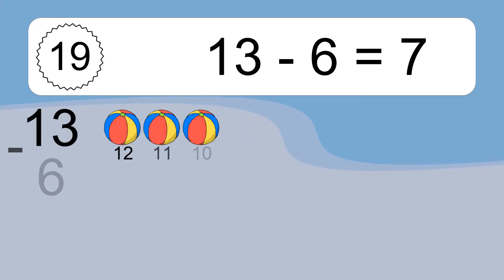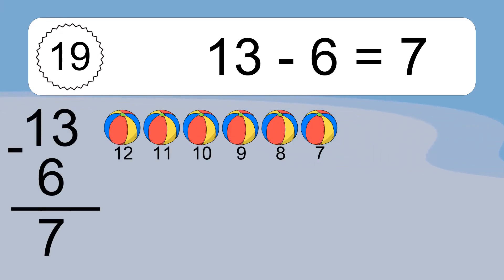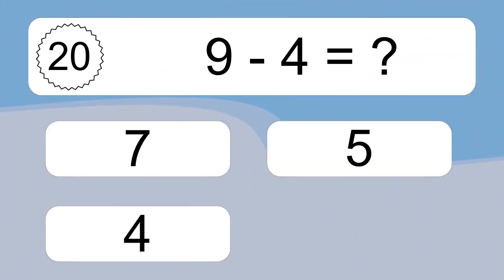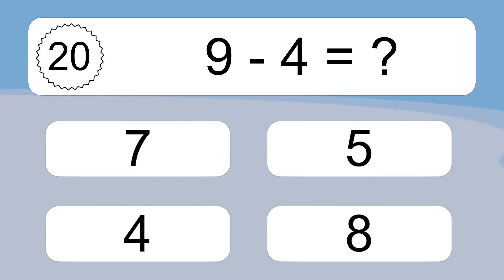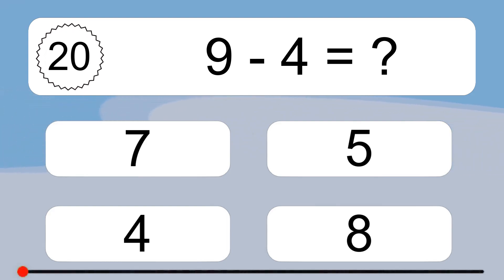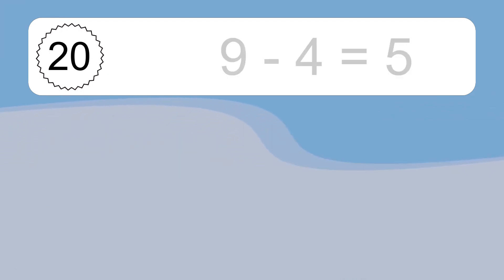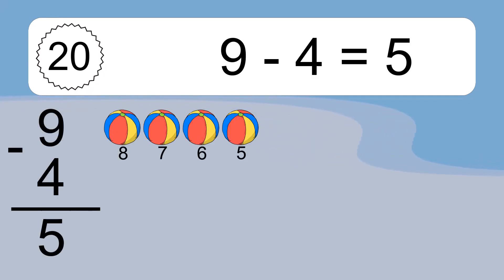13 minus 6 equals 7. Let's count it: 12, 11, 10, 9, 8, 7. 9 minus 4 equals what? 9 minus 4 equals 5. Let's count it: 8, 7, 6, 5.